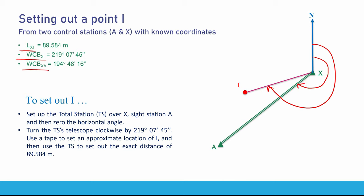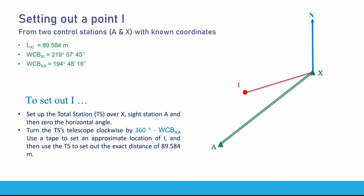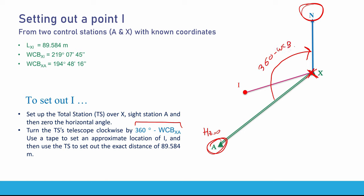In Method 1, set up your total station over X, sight station A with a prism, and set the horizontal angle to zero. Then turn the total station telescope clockwise by the angle 360 minus the whole circle bearing of XA. This gives you the north direction, as explained in detail in the whole circle bearing and sighting north video.